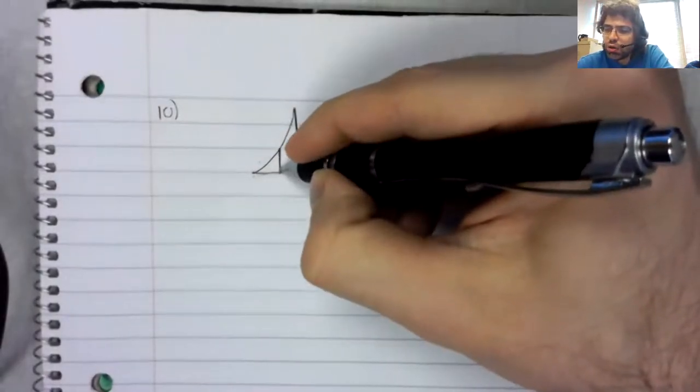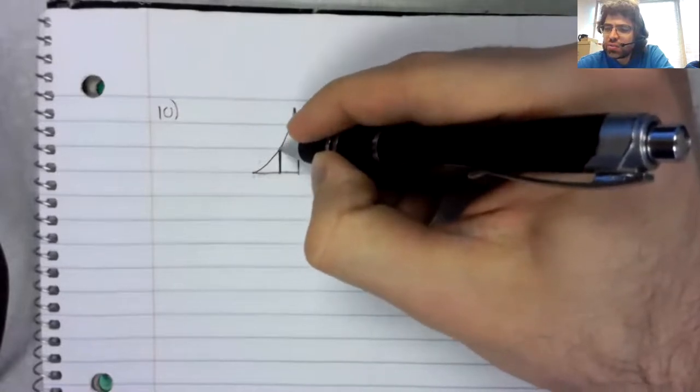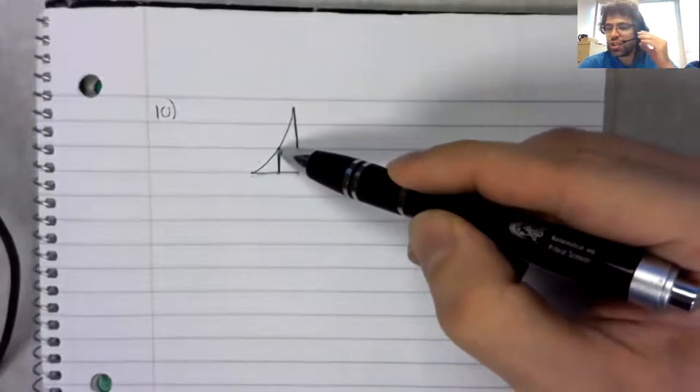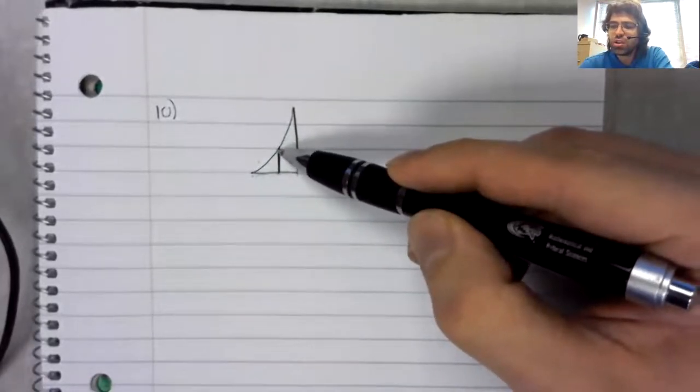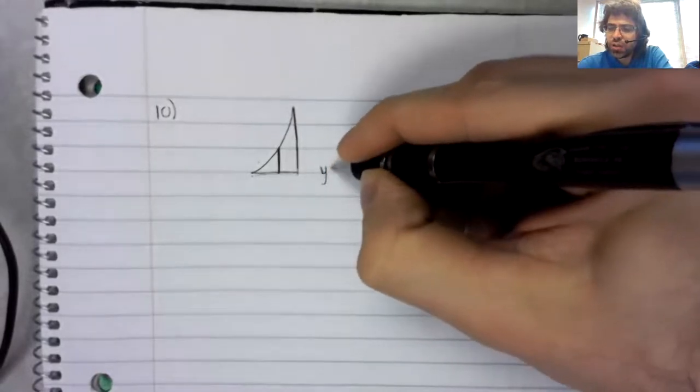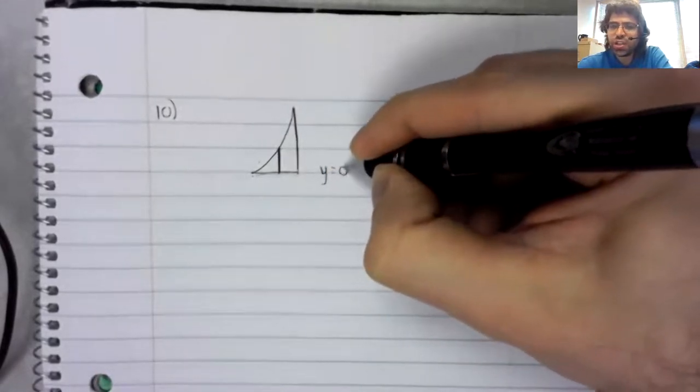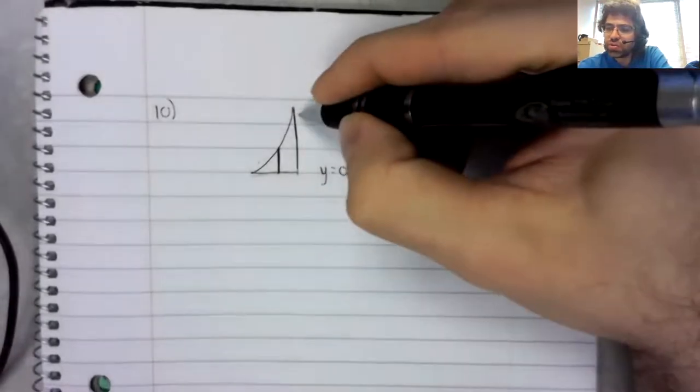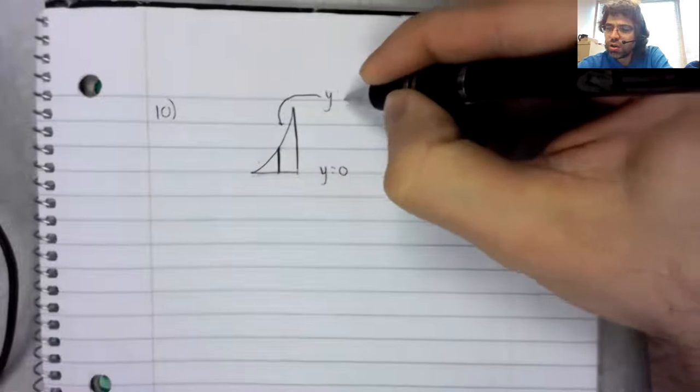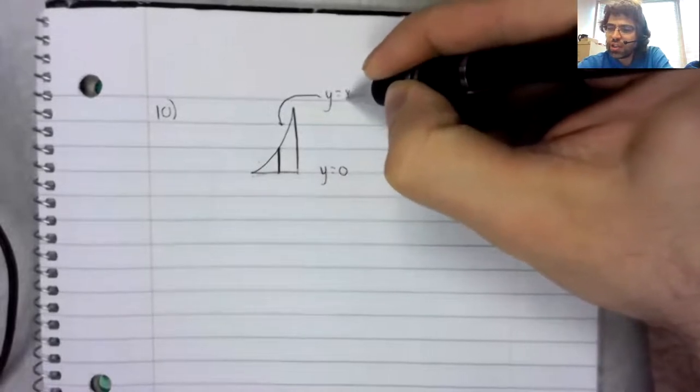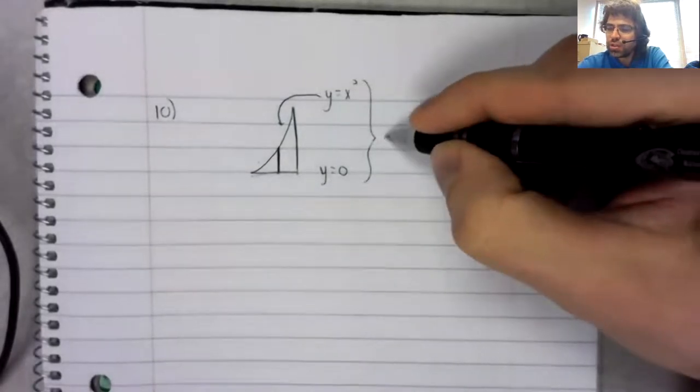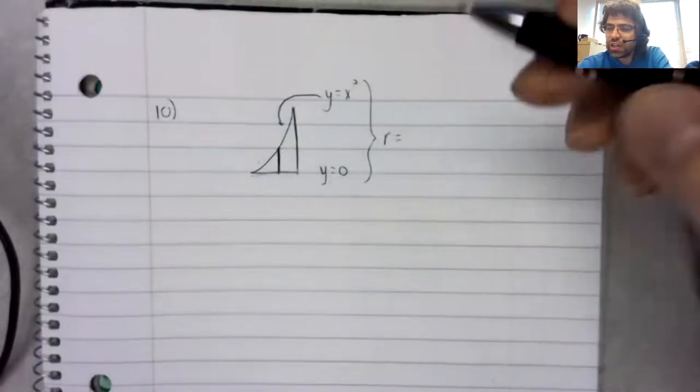Our radius is the distance from the axis of rotation to the curve. Our axis of rotation is y equals 0. The curve is y equals x squared. So,